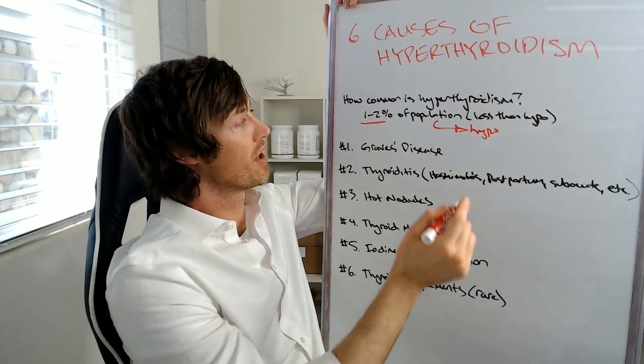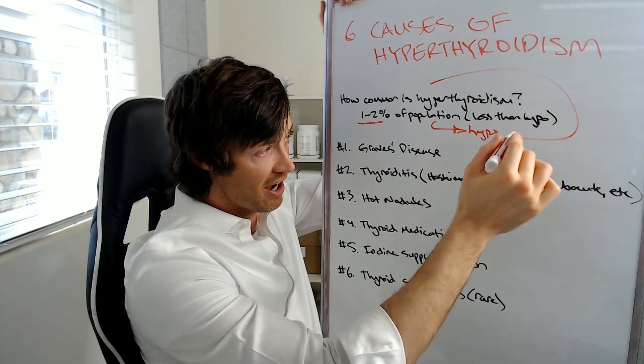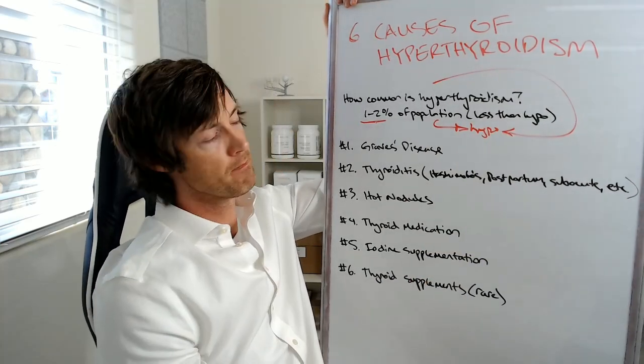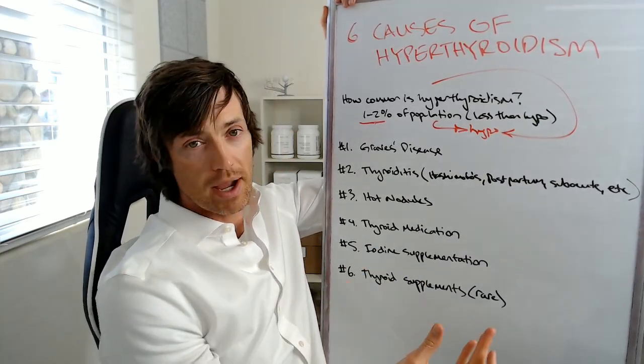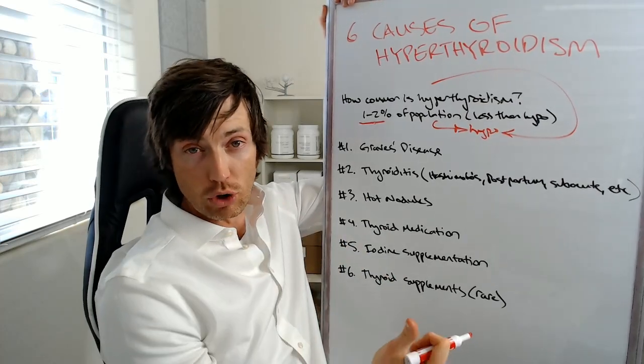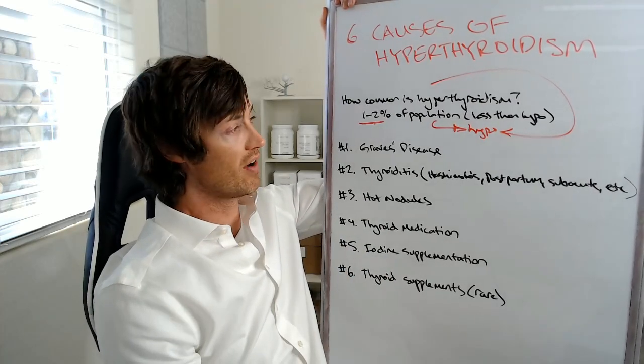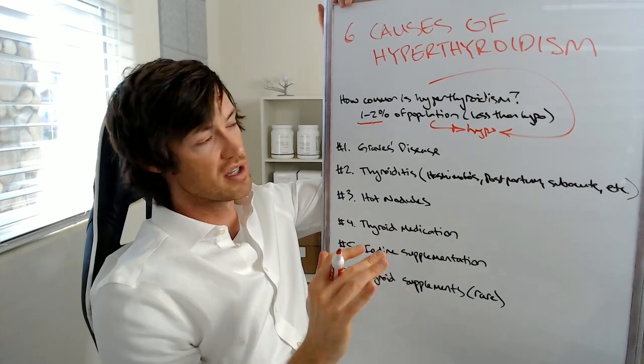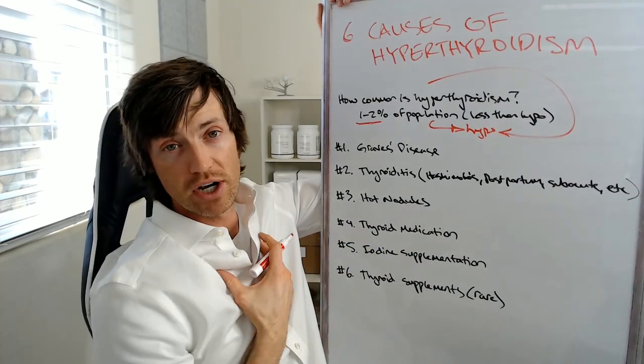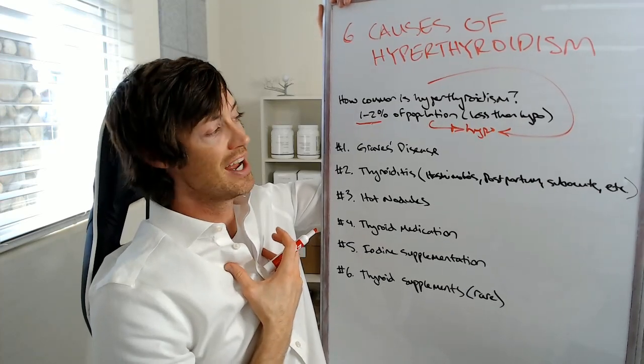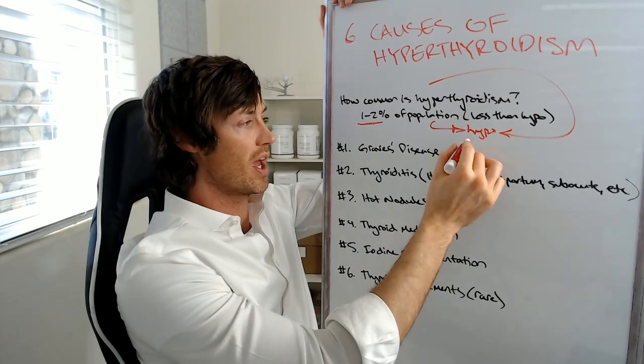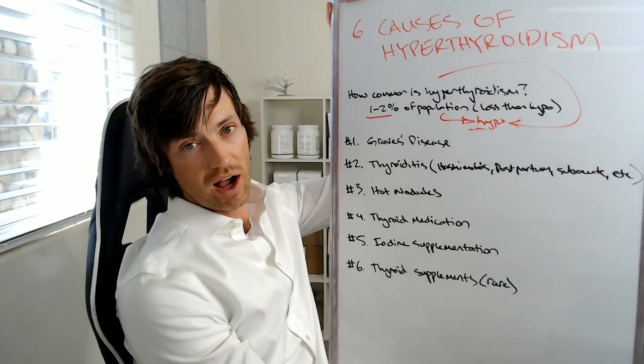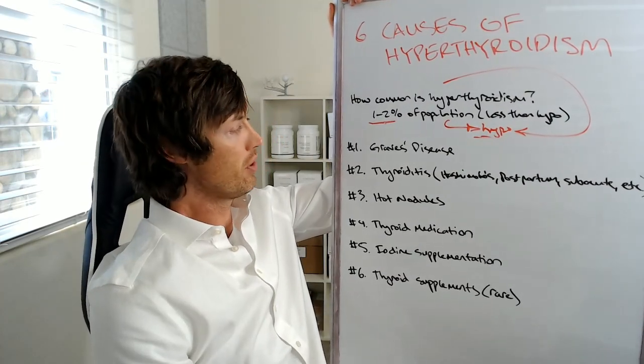So when I talk about hypothyroidism, it includes those people who had hyperthyroidism, keyword being had hyperthyroidism, who now have hypothyroidism because their thyroid has either been removed or ablated with radioactive iodine, because those are the two main treatments. So most of the information, if you're listening to this and you have hyperthyroidism, if you ever hear me talking about hypothyroid supplements or anything else, that also applies to you. But let's talk about some of the causes, at least the top causes of hyperthyroidism.